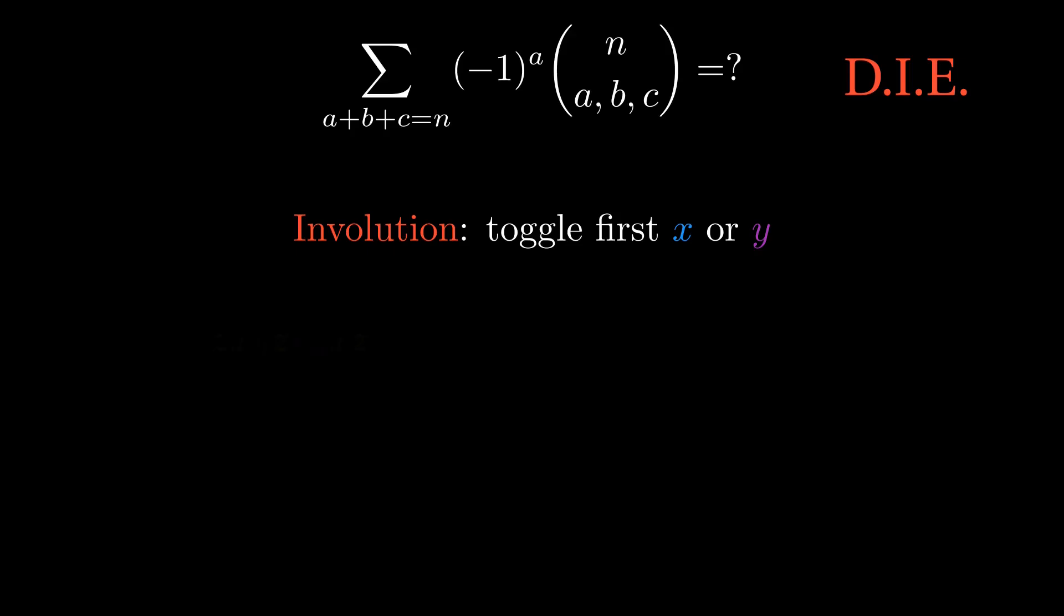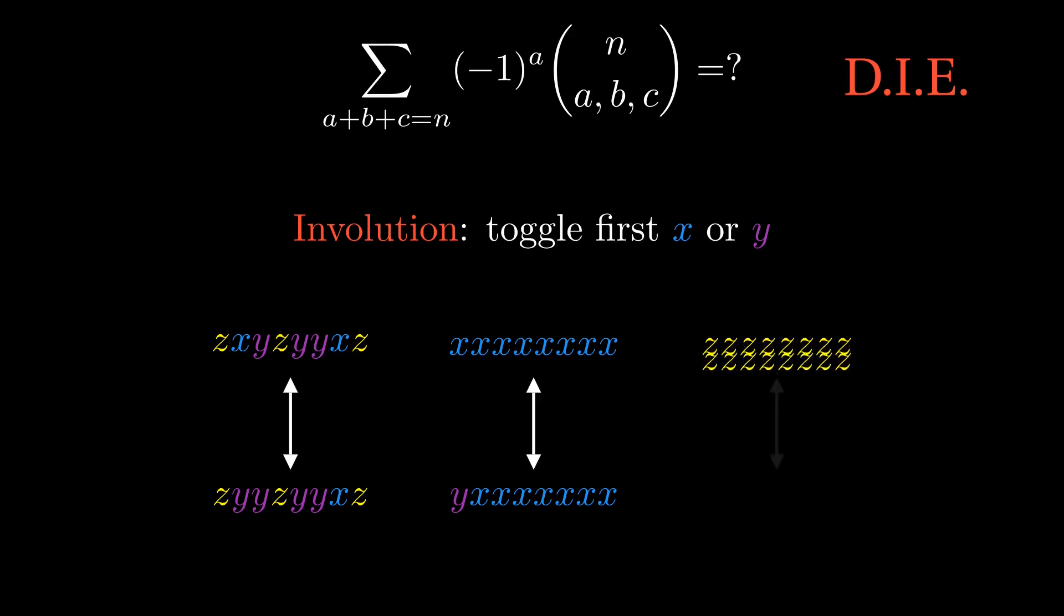The involution is to find the first x or y step and toggle it. If it was x, step in the y direction instead. If it was y, go in the x direction. That changes the number of x's by one, and so it's parity reversing. The only exceptions are the paths without any x's or y's. There's nothing to toggle. There's only one path like that. Go in the z direction n times in a row. That path has no x steps in it at all, so the parity is (-1)^0, which is positive. So we know the alternating trinomial sum comes out to be exactly one.